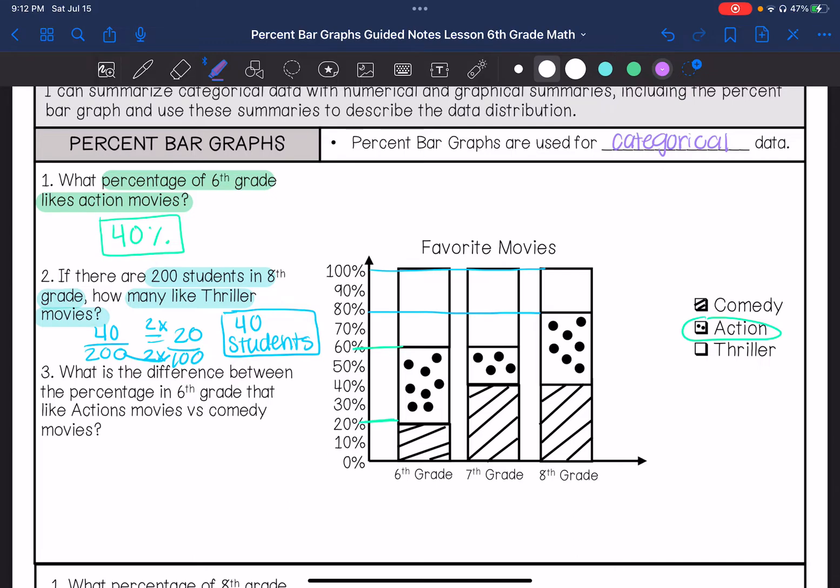What is the difference between the percentage in sixth grade that likes action movies versus comedy movies? I already know that action movies is 40%. Comedy movies is going to be 20%, so my difference is 20%.